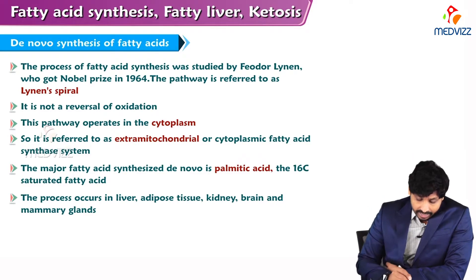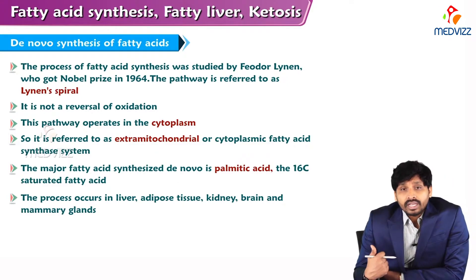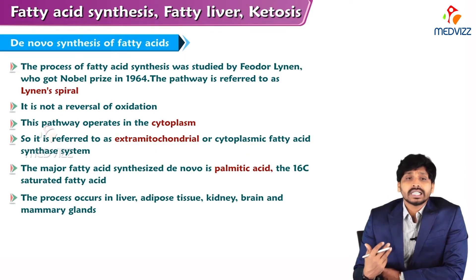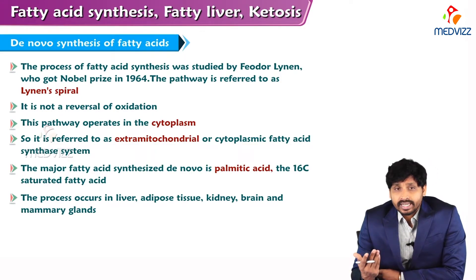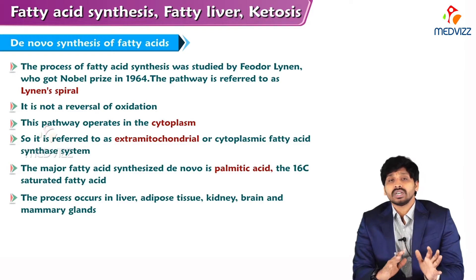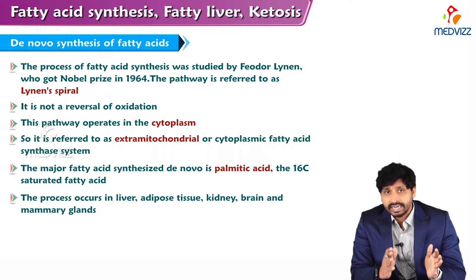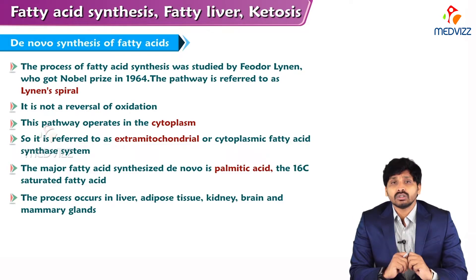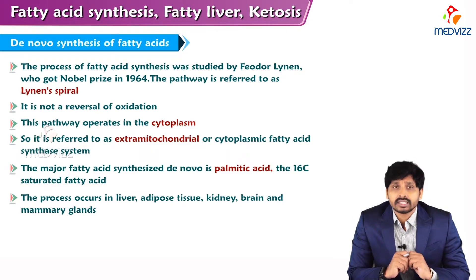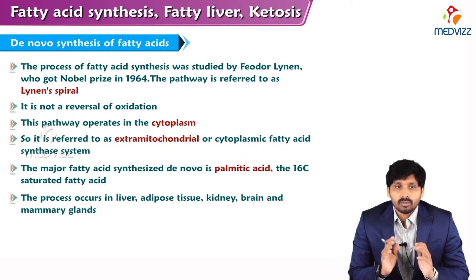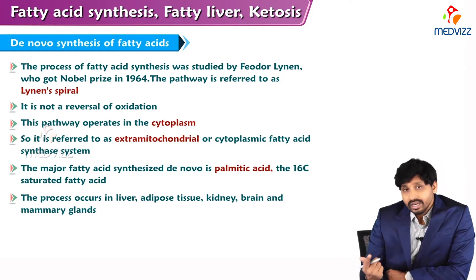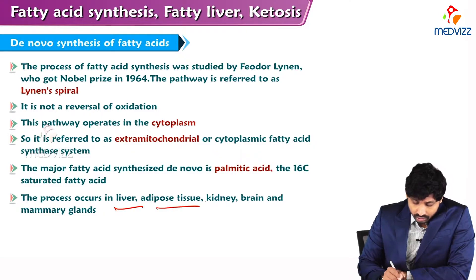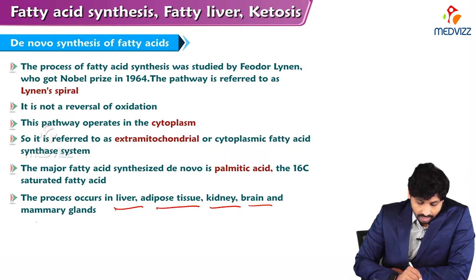The major fatty acid synthesized in our body via the de novo pathway is palmitic acid — a 16-carbon saturated fatty acid. Saturated fatty acids have no double bonds, whereas unsaturated fatty acids do have double bonds. This pathway takes place in the liver, adipose tissue, kidney, brain, and mammary gland.